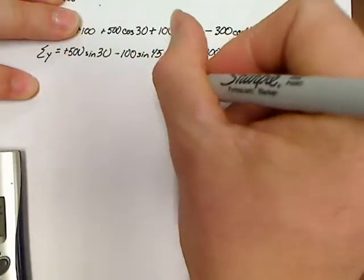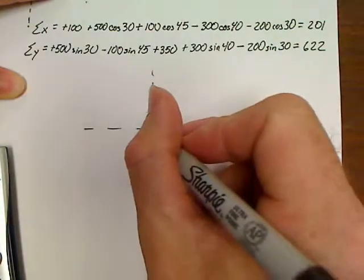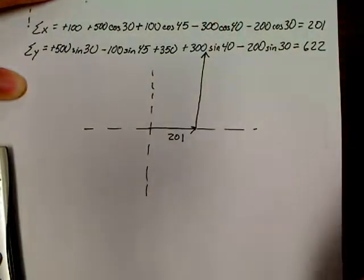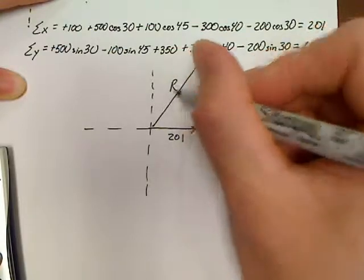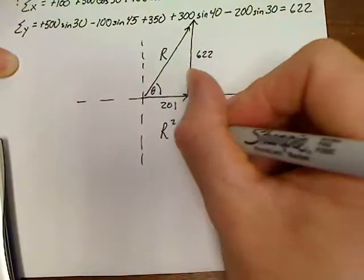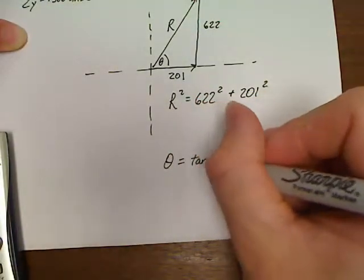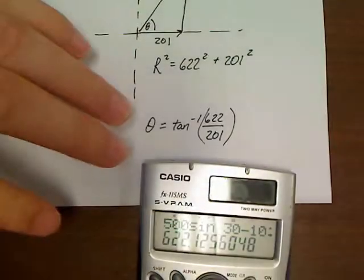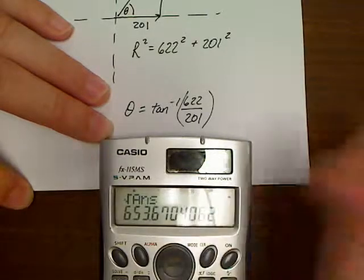So now we can draw our final picture. And for our final, we've got an x of positive 201 and a y of, obviously my scale is not here, of 622. And our goal is to find that r and that theta. So r squared would be equal to 622 squared plus 201 squared. Let's see what kind of damage we can do here. So we've got 622 squared plus 201 squared equals square root answer, 654.